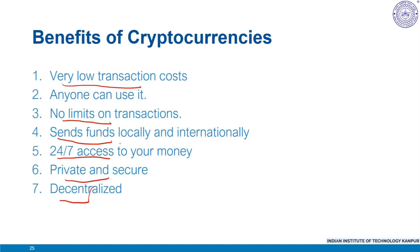Bitcoin has never been hacked to date, though scamming and fraud are common in the crypto space. Lastly and most importantly, it is decentralized — cryptocurrencies do not need a government or company to record transactions, issue new currency or record investments. No bad economic policy or bank breakup can directly affect their value. To summarize: key features include low transaction costs, widespread usage, no transaction limits, borderless transfers, 24x7 access, privacy, security, and decentralized peer-to-peer access.